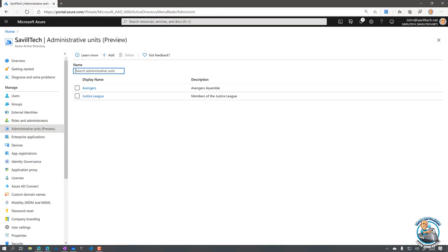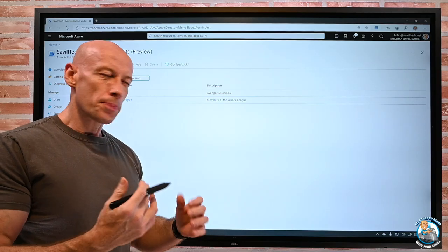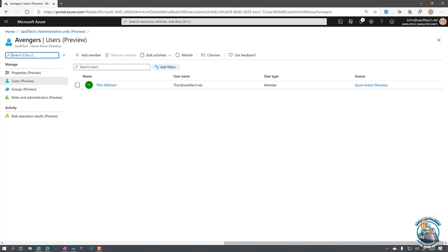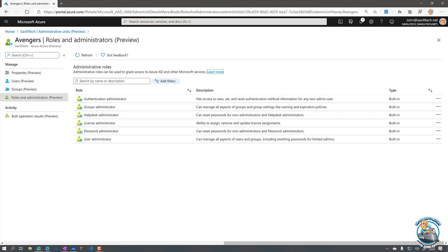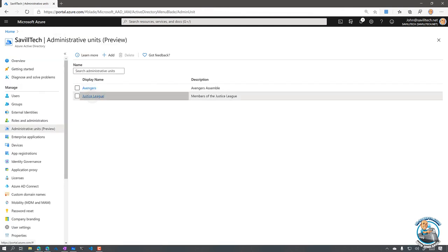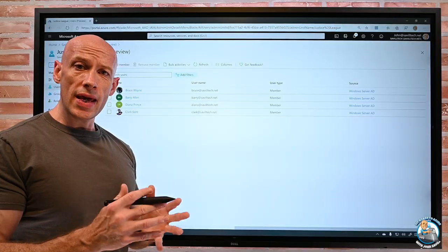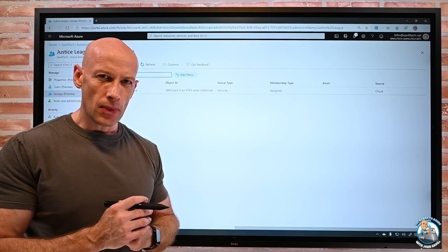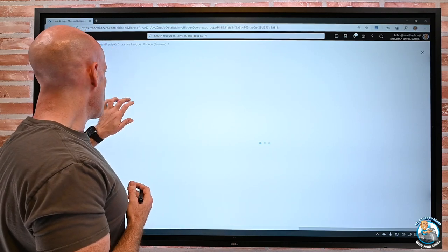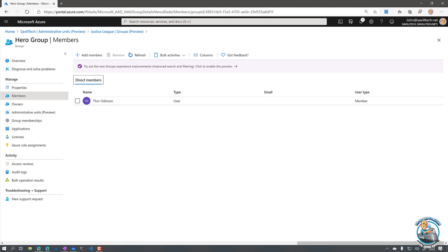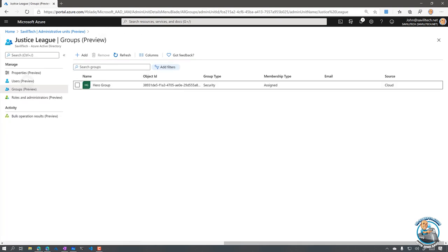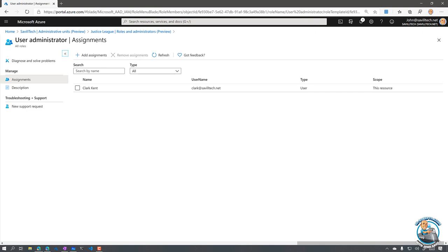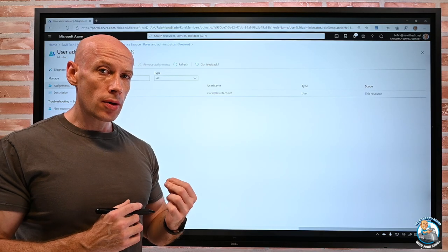So, if I can think about it, if I jump over to administrative units, this is in preview at this time, and I've created two. Now, I've got one called Avengers. And in Avengers, it's just someone called Thor Odinson. And right now, I've not given really anyone these roles. But if I go and look at Justice League, I've got four people in the Justice League. I've also added a group called the Hero Group. And I'll talk about this in a second. And this actually has Thor in it. If I actually go and select the Hero Group and look at the members, that has Thor in it. So, someone that's not natively a member of that Justice League. And then I have these roles. And what I've done is I've given Clark that user administrator role for that administrative unit.